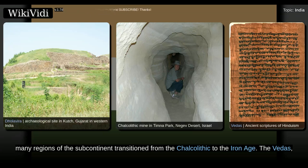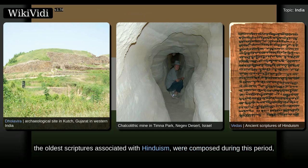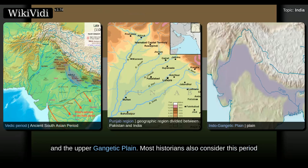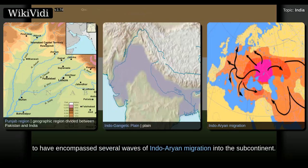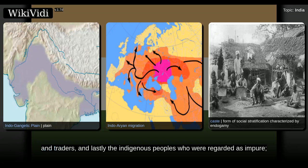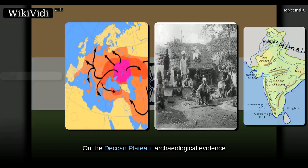During the period 2000–500 BCE, many regions of the subcontinent transitioned from the Chalcolithic to the Iron Age. The Vedas, the oldest scriptures associated with Hinduism, were composed during this period, and historians have analyzed these to posit the Vedic culture in the Punjab region and the Upper Gangetic Plain. Most historians also consider this period to have encompassed several waves of Indo-Aryan migration into the subcontinent. The caste system arose during this period, creating a hierarchy of priests, warriors, free peasants, and traders, and lastly the indigenous peoples who were regarded as impure. Small tribal units gradually coalesced into monarchical, state-level polities.